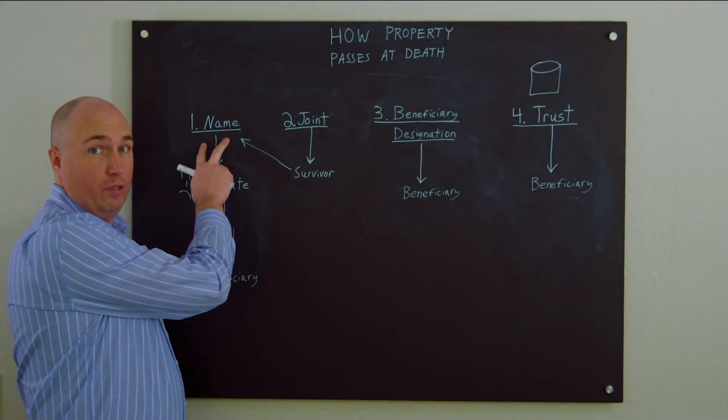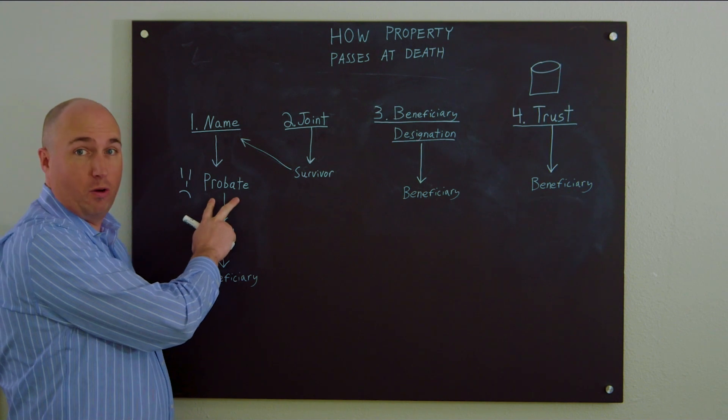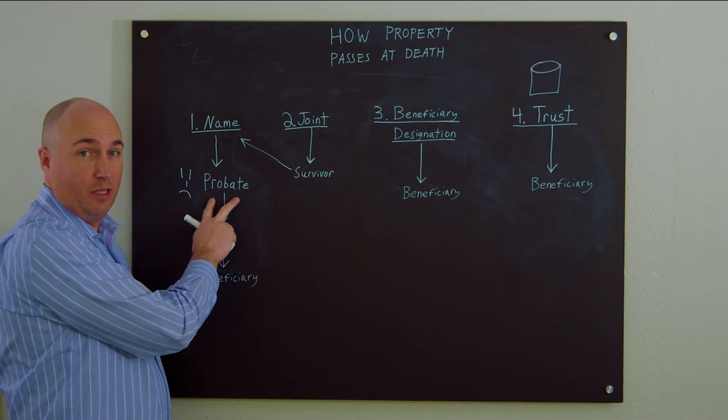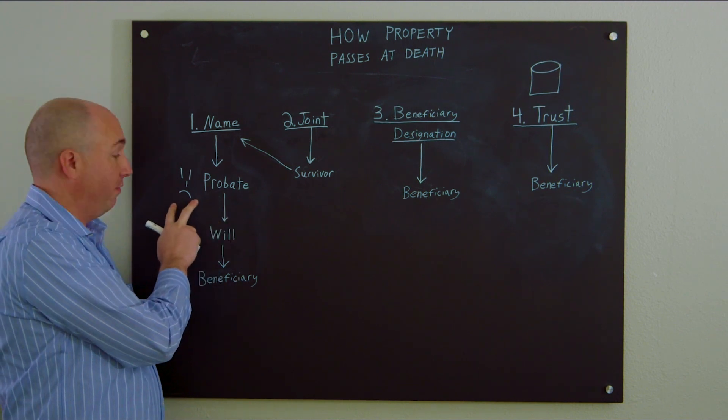Anything you own in your own name is going to go through a court process known as probate. We don't like probate. It's a frowny face.